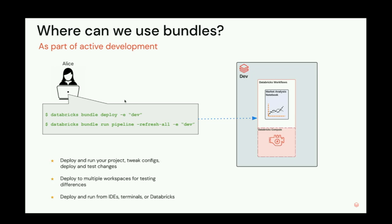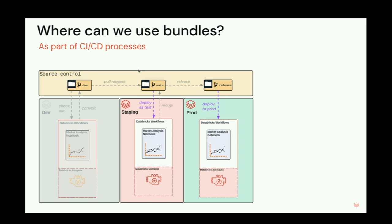Now we have this file. How do we actually use it? Working on a laptop, we want to push changes to a Databricks workspace. We use the Databricks CLI with our YAML file and say 'databricks bundle deploy' to the dev environment — that pushes all the code there. Then 'databricks bundle run' triggers the job and it executes. This is really helpful during development. You can use this from an IDE, from the command line, or inside Databricks itself.